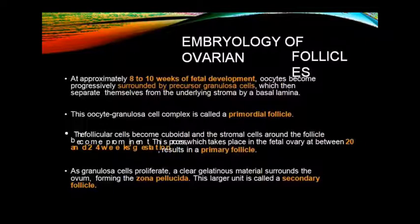The follicle cells are cuboidal and stromal cells, and the follicle cells are prominent. In this process, the fetus goes into the ovary at 20 to 24 weeks, forming the primordial follicle. Granulosa cells now proliferate, and clear gelatinous material surrounds the ovum. The follicle cells proliferate and zona pellucida forms. It becomes a larger unit called the secondary follicle — the primary follicle is now made into a secondary follicle.